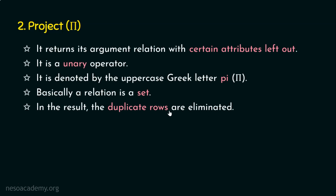For example, if we are retrieving instructor name and salary, and there are two instructors named John with the same salary, we will get only one John's information — the other will be discarded as a duplicate. Project will not display duplicate rows.